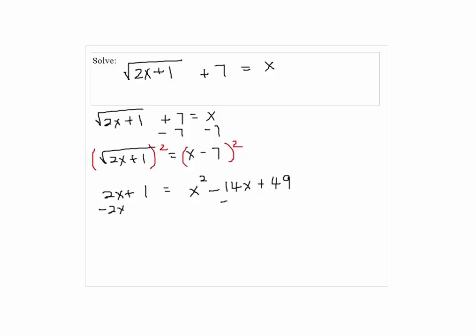By subtracting 2x and 1 from both sides, we have 0 equals x squared minus 16x plus 48.